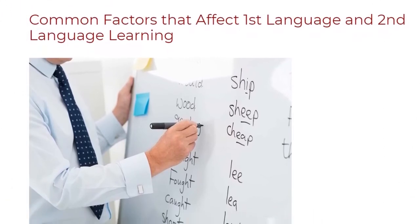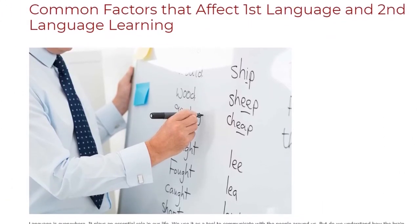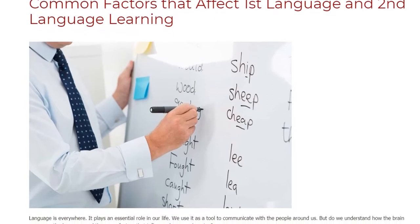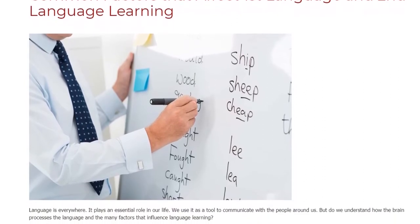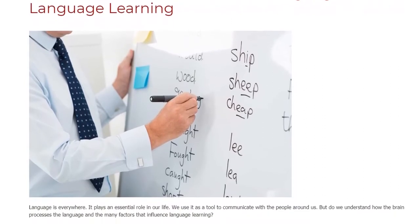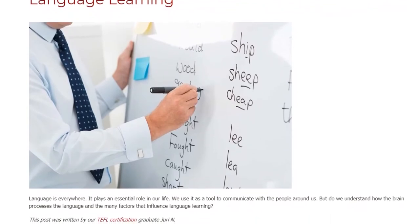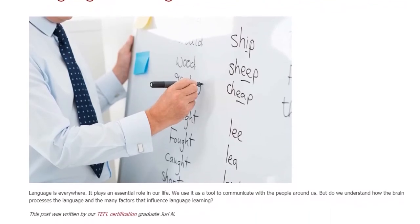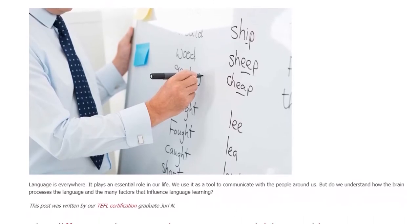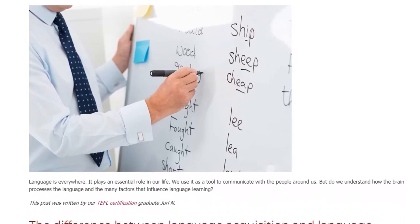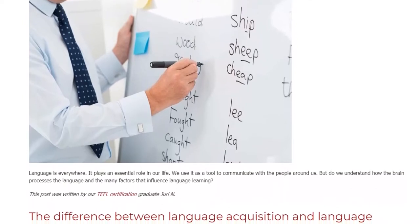Common Factors That Affect First Language and Second Language Learning. Language is everywhere. It plays an essential role in our life. We use it as a tool to communicate with the people around us. But do we understand how the brain processes language and the many factors that influence language learning?